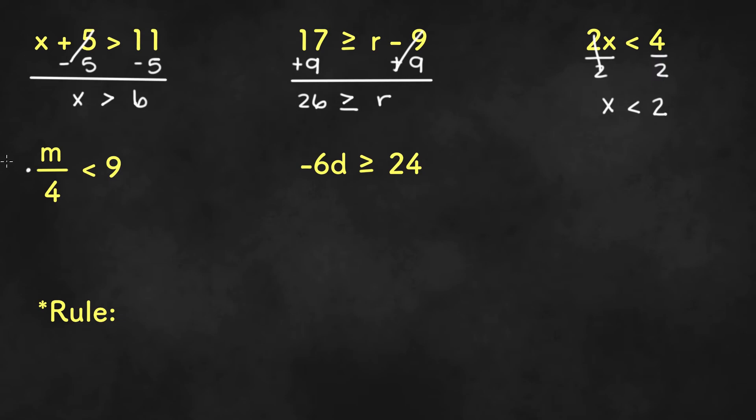Here we can multiply by 4 on both sides and we get m is less than 9 times 4 or 36.